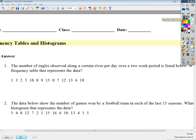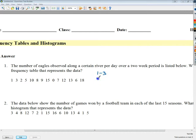So the first one says that the number of eagles observed along a certain river per day over a two week period is listed below. Make a frequency table that represents the data. So I'm going to look and I see that the numbers go from about one to 18. A reasonable number of groups probably there would be let's say five groups maybe or we could do six. So if I wanted to do six, I'd do groups of one to three, four to six, seven to nine, ten to twelve, thirteen to fifteen, and sixteen to eighteen.